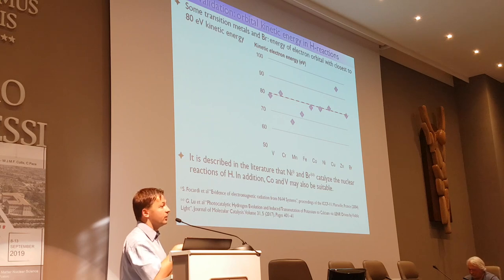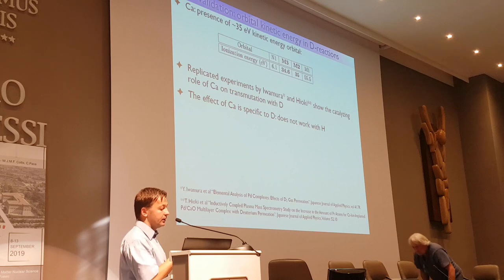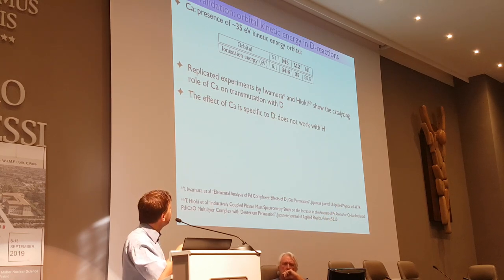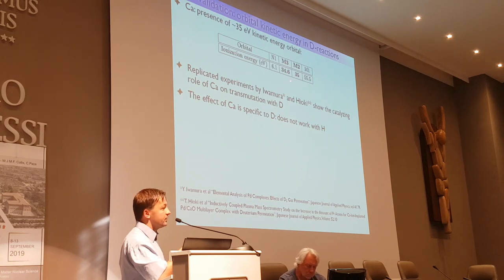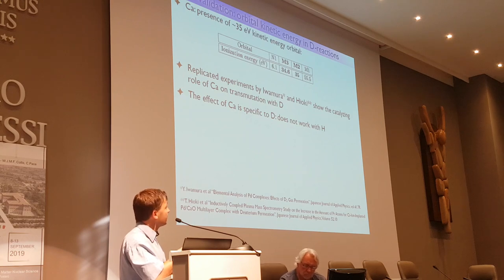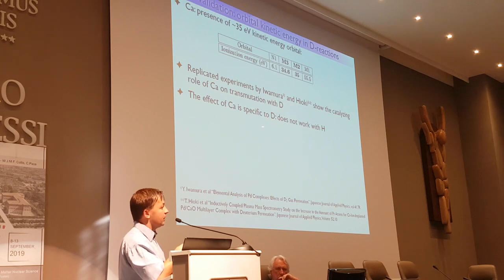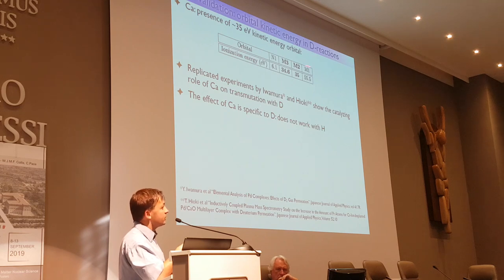In the case of the deuteron I calculated 35 electron volts, and for calcium you can indeed see orbitals very close to 35 eV kinetic energy. Here I mention Dr. Ivan Mura's experiments which were replicated by another Japanese group: they show calcium-based material catalyzing transmutation when deuterium is present. In the replication experiments it was specially tested for hydrogen, and it was found that this transmutation works only with deuterium, not with hydrogen — pointing to validation that the 35 eV is only relevant for deuterium, not for hydrogen-based materials.